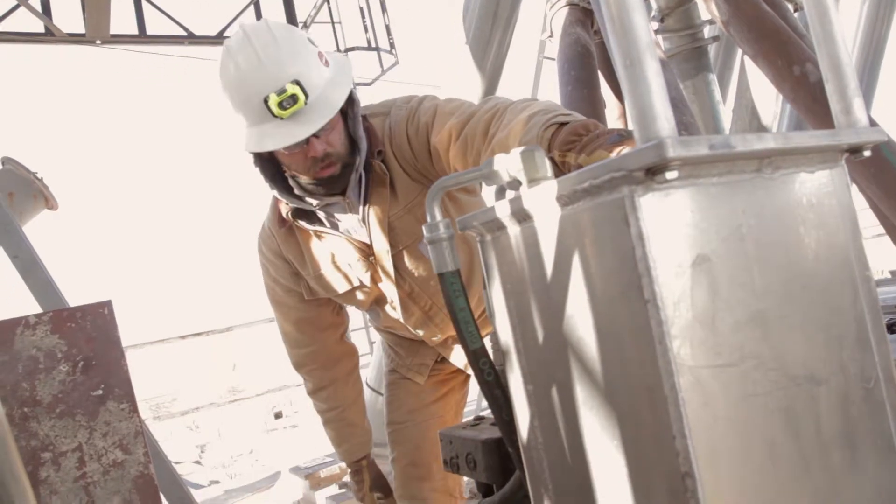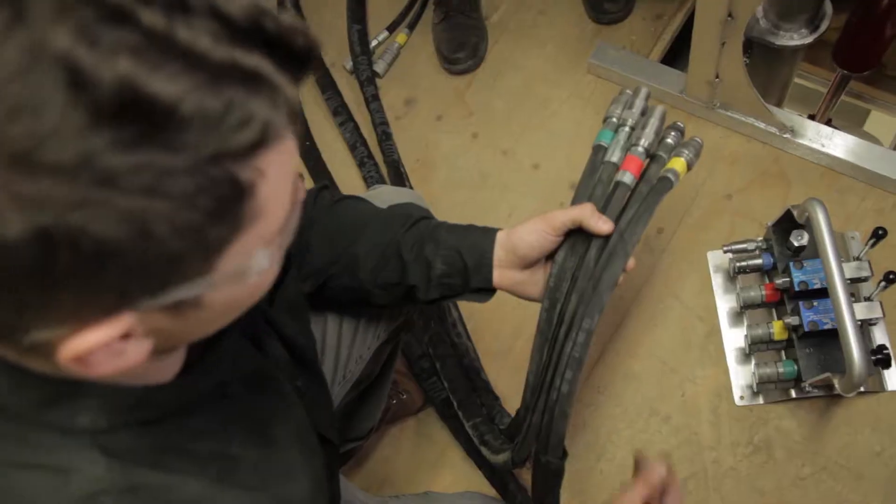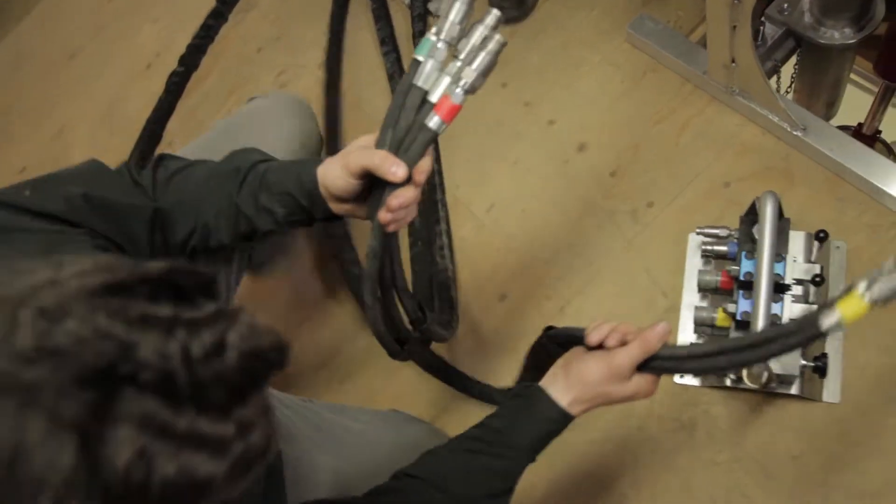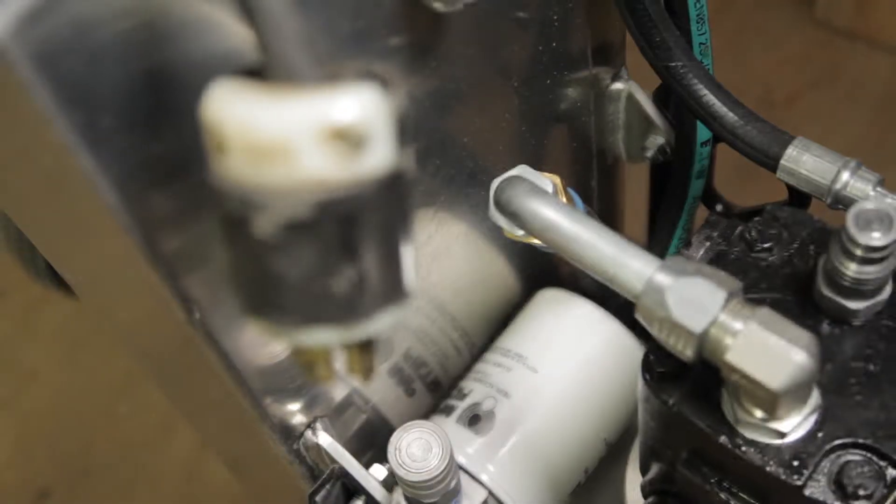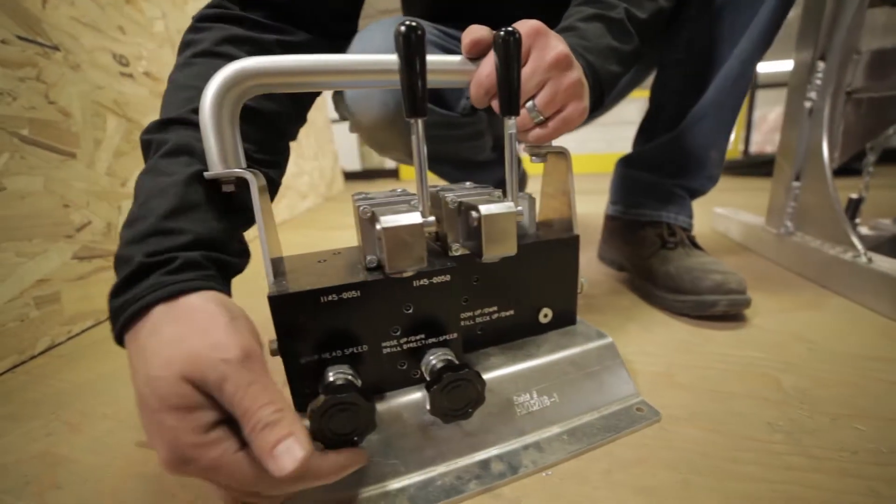Now when you're working with serious power, we need to take some serious safety precautions. Before connecting or disconnecting any hoses, always make sure that the power unit is off and that the control valves are in the neutral position.